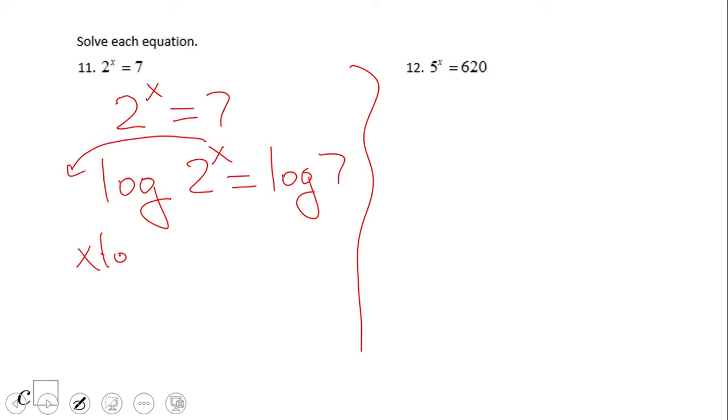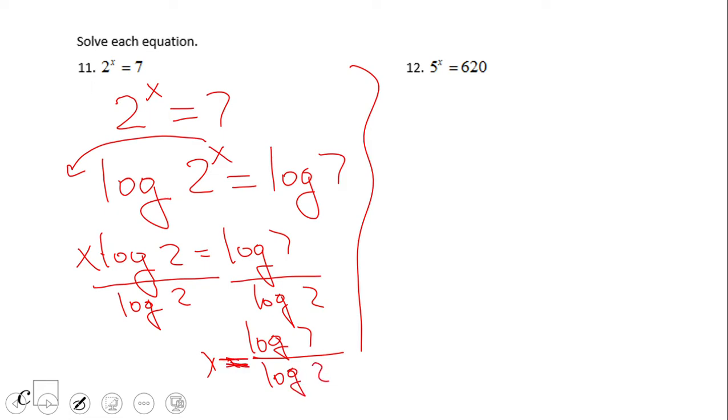By doing this logarithmation process, we move this x up front, so we have x log base 10 of 2 equals log base 10 of 7. To solve for x, we can divide by log of 2 and we finish the problem. We have log of 7 over log of 2.